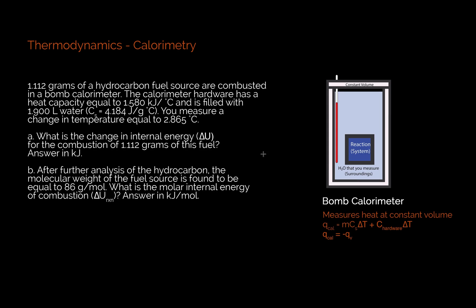We're going to use this equation. Q cal equals MCs delta T plus C delta T. We're going to flip our perspective into the system and then do a little bit of stoichiometry at the end in order to come up with this answer.